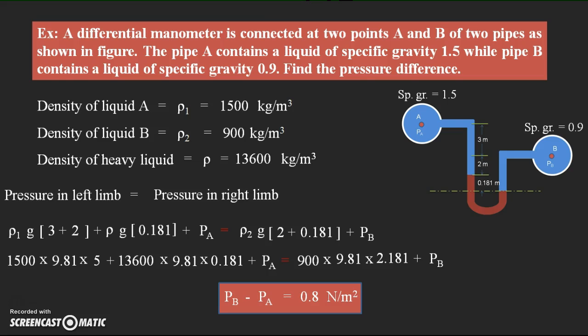When a differential manometer is connected to two pipes at two different levels, we apply the equilibrium condition to find the pressure difference. One more case we can face is when the two pipes are at the same level; in that condition also we apply the equilibrium condition to find the pressure difference. I hope you understand this problem — thanks for watching.